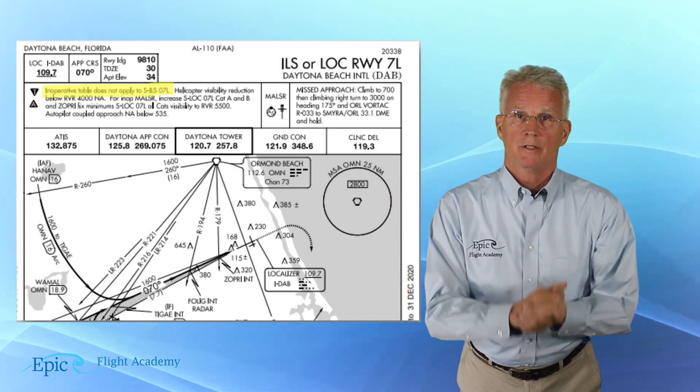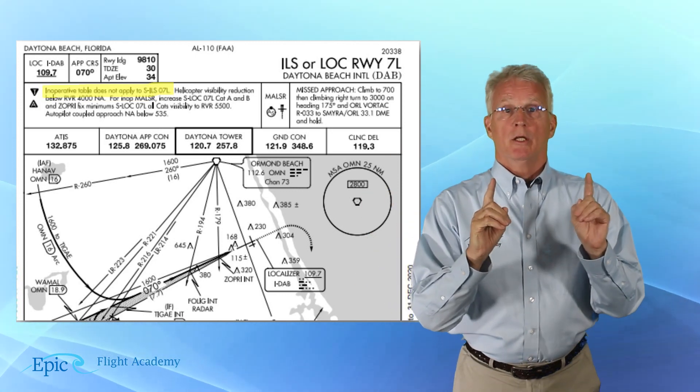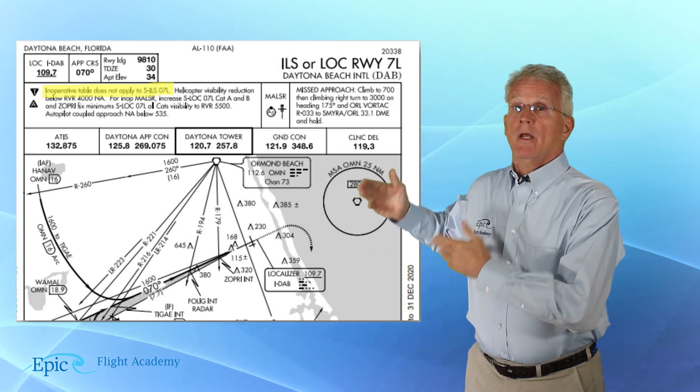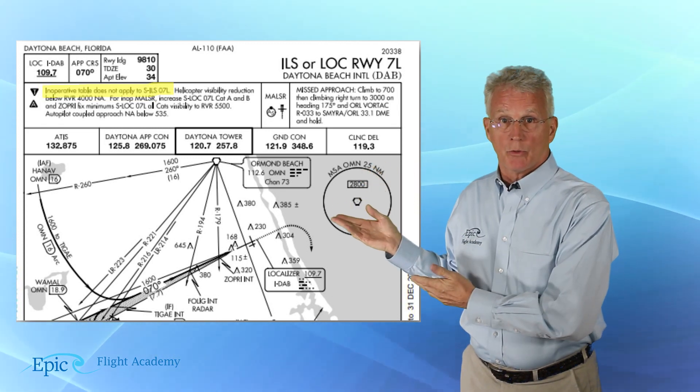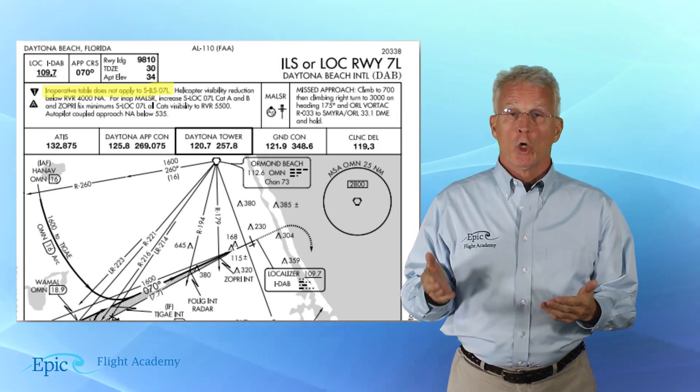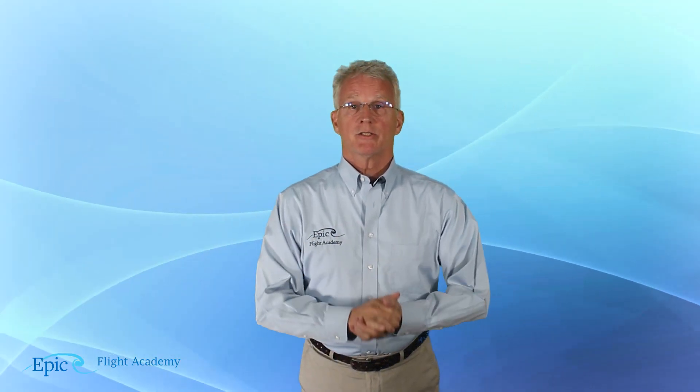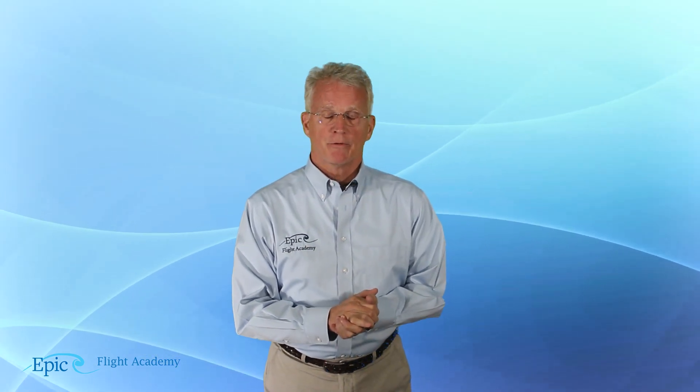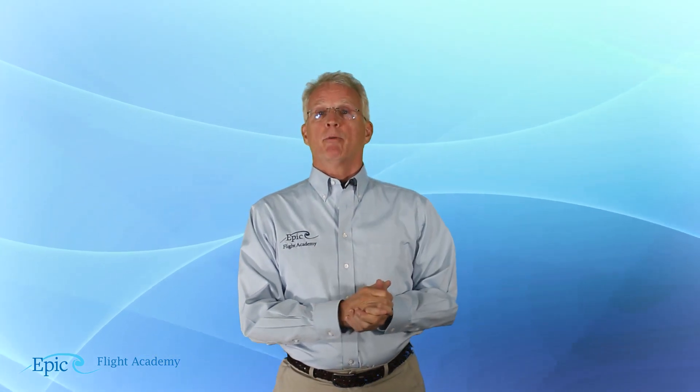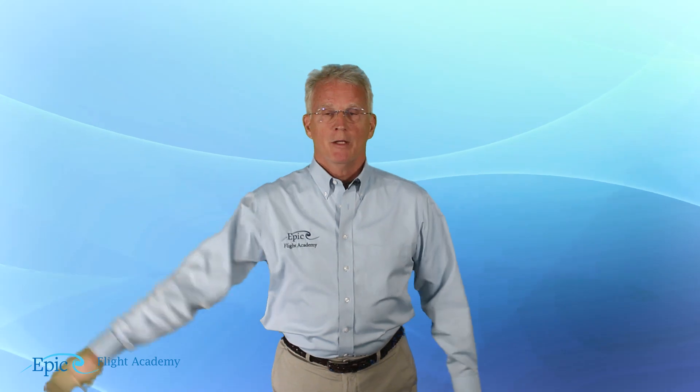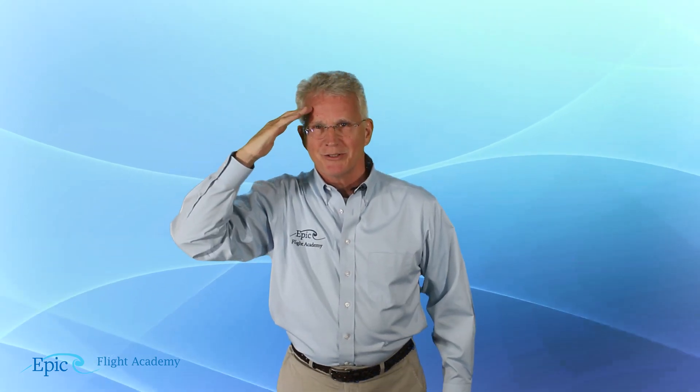Well, why would the table be there? Because it would still apply if I was shooting the localizer approach or circling. Well, folks, that just about wraps up our information on the inoperative components table. Be sure to join us next time.